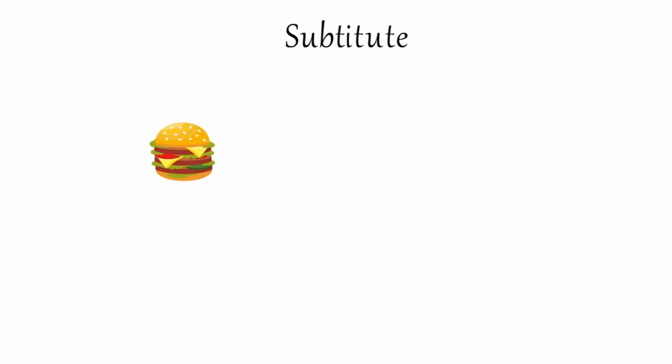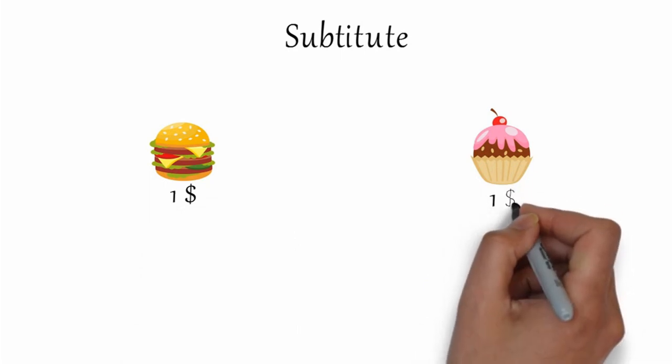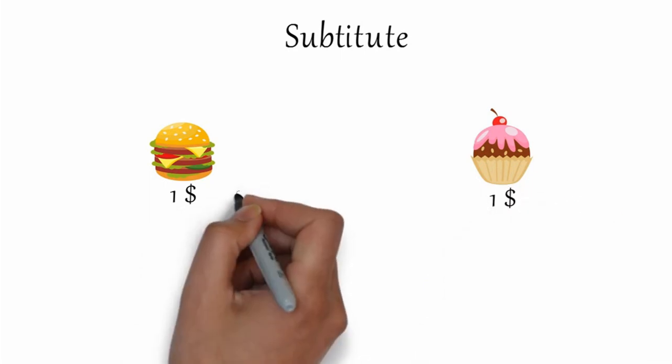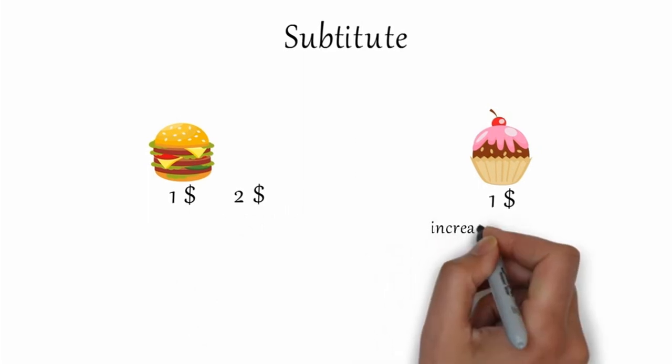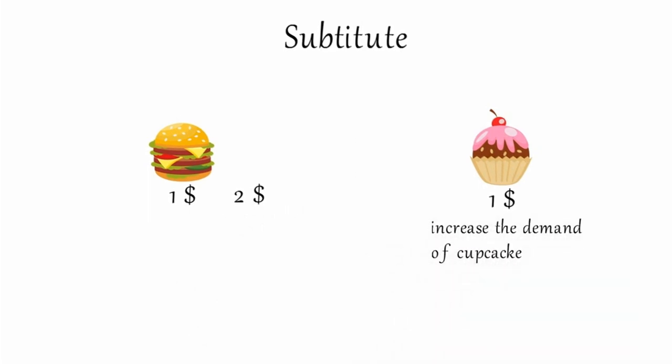Let's take an example. Mr. Watson liked to eat cheeseburgers and cupcakes. The price of a cheeseburger is $1, and the same price for cupcakes also. These two commodities are totally substituted. Then just think that the price of a cheeseburger increases by $1. So then Mr. Watson will buy more cupcakes than cheeseburgers.